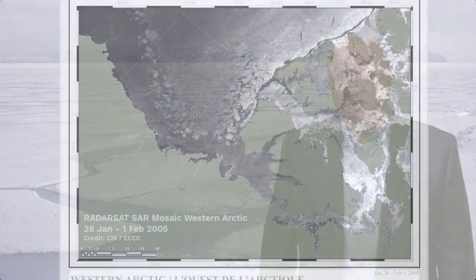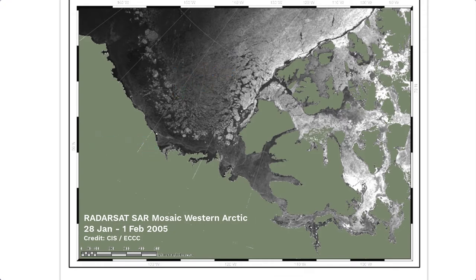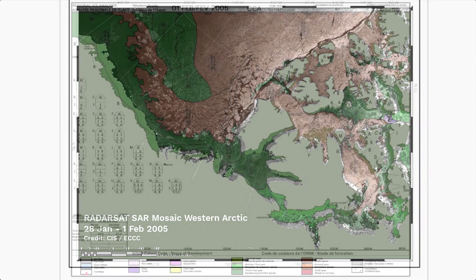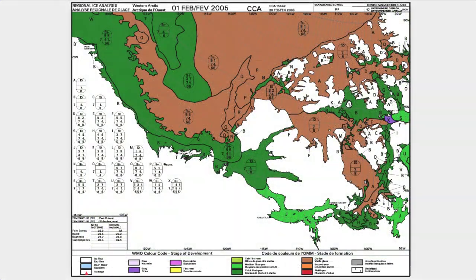In this example from the High Arctic, we can clearly see the bright multi-year ice floes that are embedded in the darker tone of the surrounding first-year ice. This information is captured in the ice chart created from the SAR image.